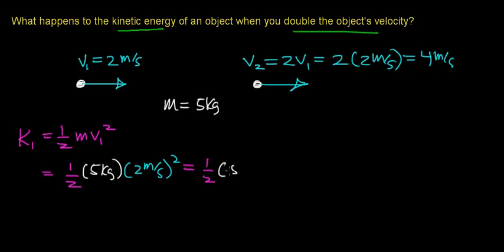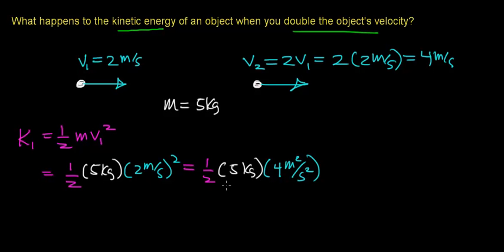When we do this, we get one half of 5 kilograms times 2 meters per second squared, which works out to be 4 meters squared per second squared. So this gives us 5 times 4 is 20, times one half, which works out to be 10 kilogram meters squared per second squared — a unit of a joule.